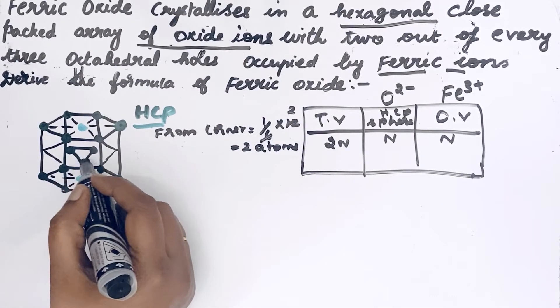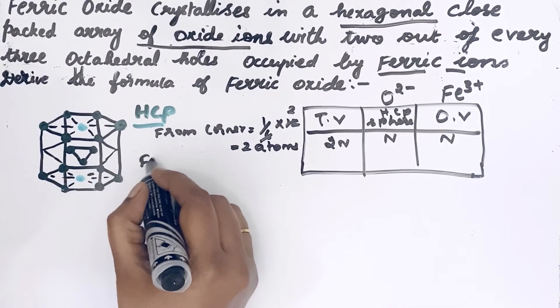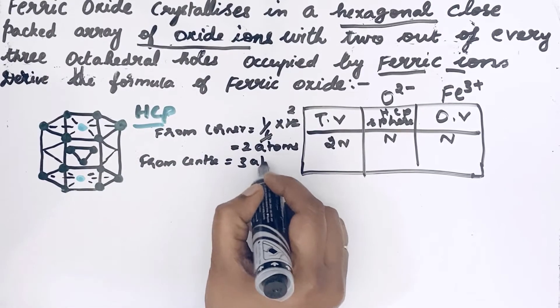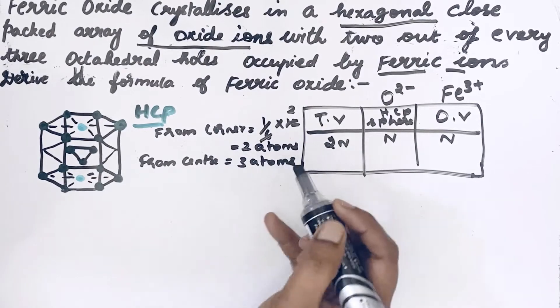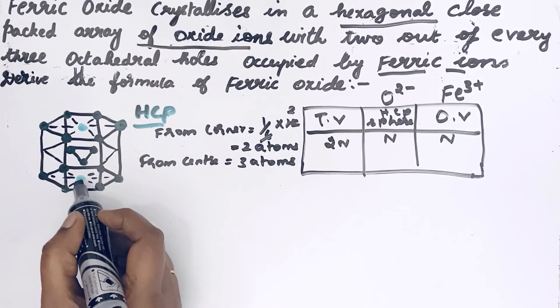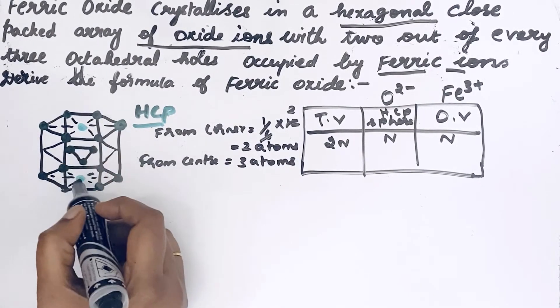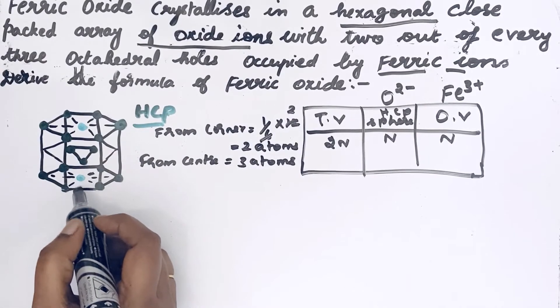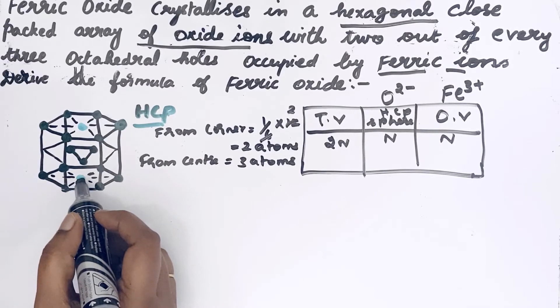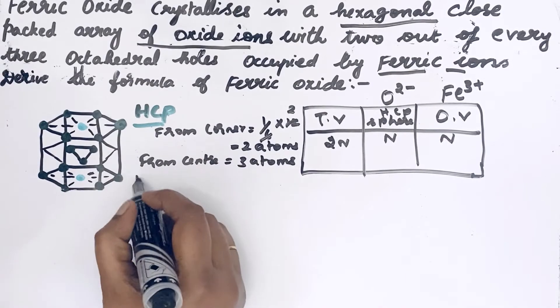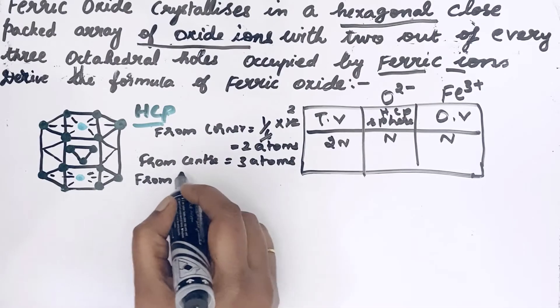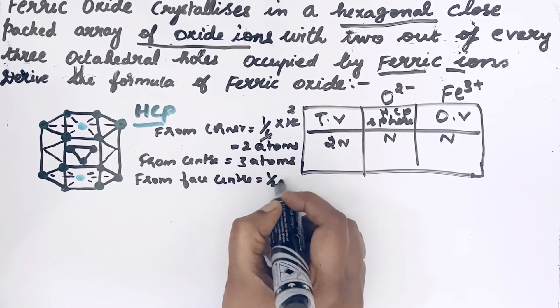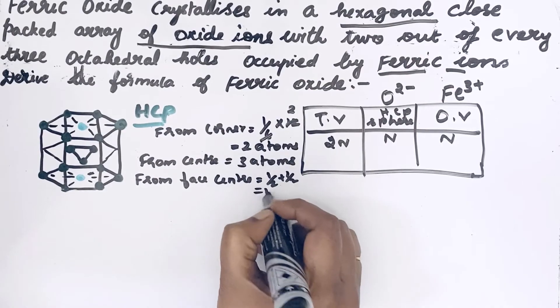In the center you can see 3 atoms. These 3 atoms are not shared between any other unit cell. In face center, you can see 2 atoms, but this atom is shared between adjacent unit cells, so its contribution is only 1/2. From face center: 1/2 + 1/2 = 1.